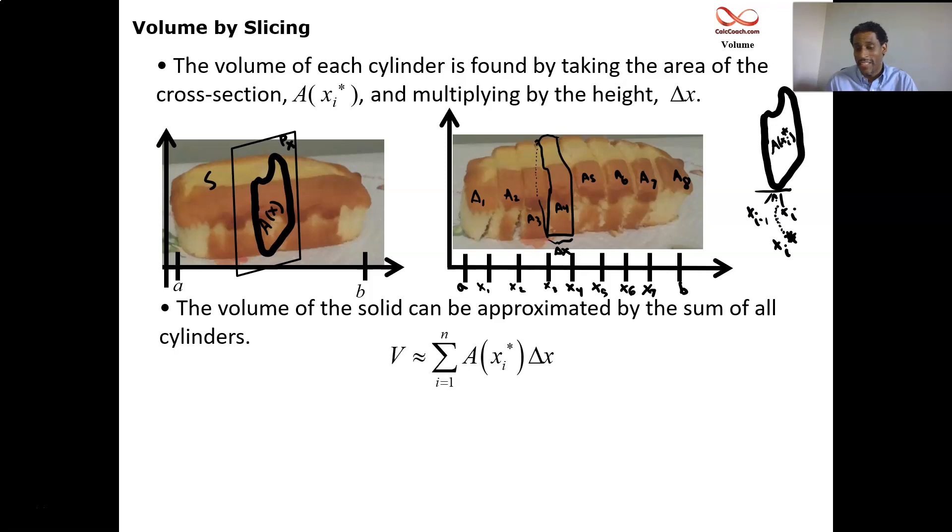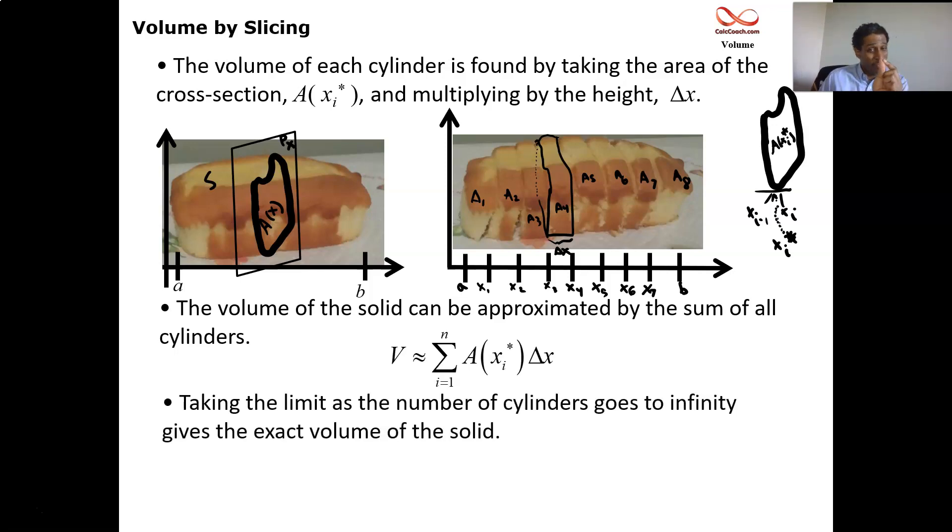But we're going to find out that that's going to be an approximation. That's not going to be very accurate. So how do we get a better approximation? We use more slices. And we're going to let the number of slices go to infinity, making the thickness essentially be infinitesimally small. Basically, it's going to be infinitely many slices, and then we'll have the exact volume.